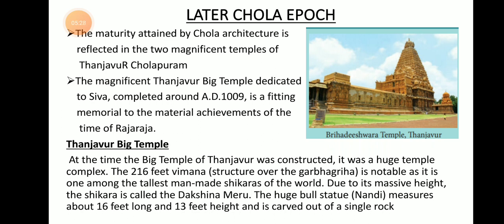The Tanjavur temple had a 216-feet Vimana. The Vimana is the rounded part situated at the top of the temple. This is one of the tallest architectural developments in the whole world, and because of its massive height, the Shikhara is also called Dakshina Meru. The temple also has a huge Nandi statue measuring about 16 feet long and 13 feet in height, made from a single rock.